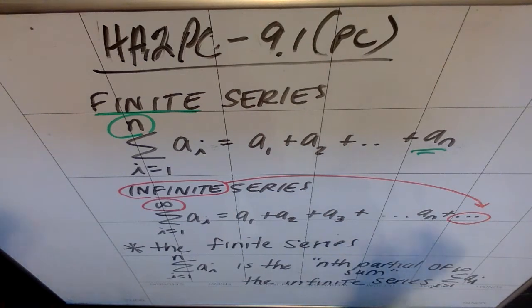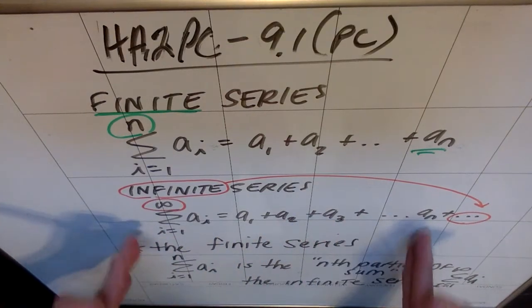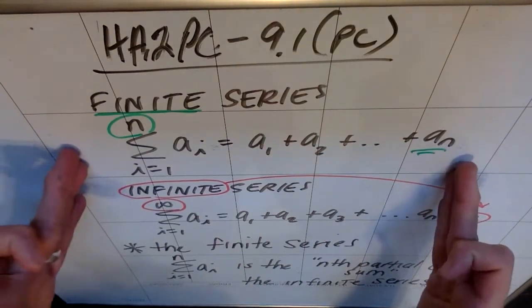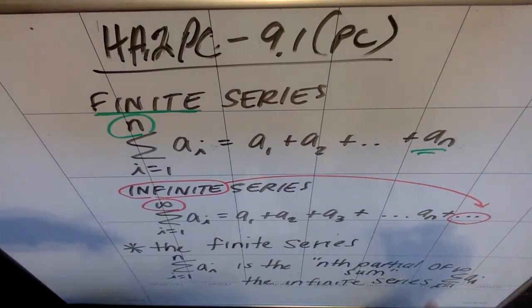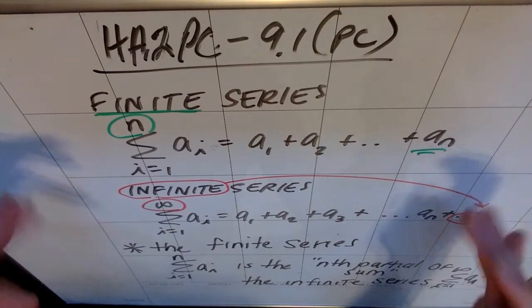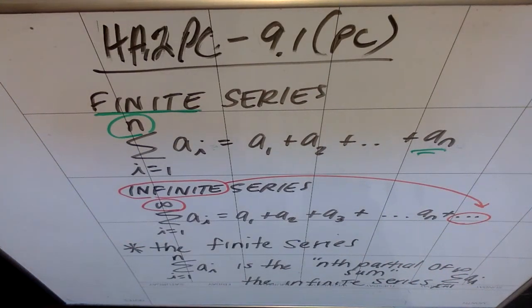So again, an infinite series goes on forever, but if you only wanted the sum of the first n terms, you could use the finite series and call this the nth partial sum. Meaning if you wanted the first 10 terms, you'd call it the 10th partial sum, or the first three terms, you'd call it the third partial sum. So you're only using the first handful of terms.